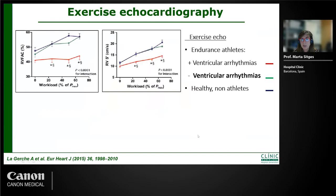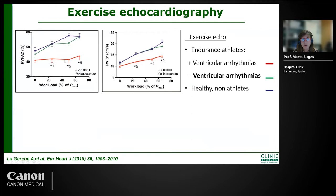Exercise imaging can also help assess the right ventricle. Work from the Belgian group by André Lagers showed that athletes who have ventricular arrhythmias originating from the right ventricle and have diseased right ventricles don't show improvement in right ventricular function during exercise. In contrast, athletes without ventricular arrhythmias and healthy people have a normal response — increasing deformation and motion of the right ventricle during exercise. Exercise testing with imaging associated may therefore be very helpful.